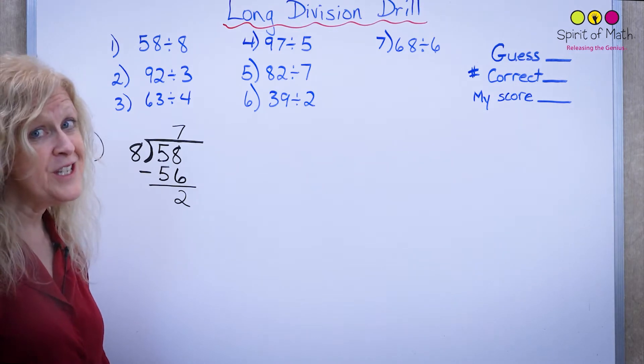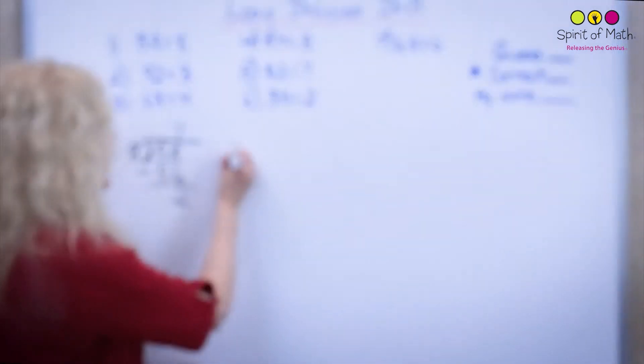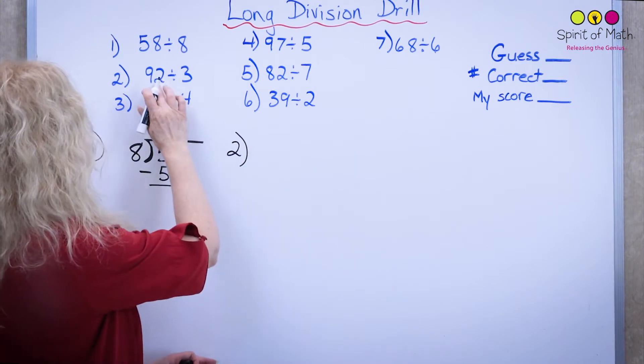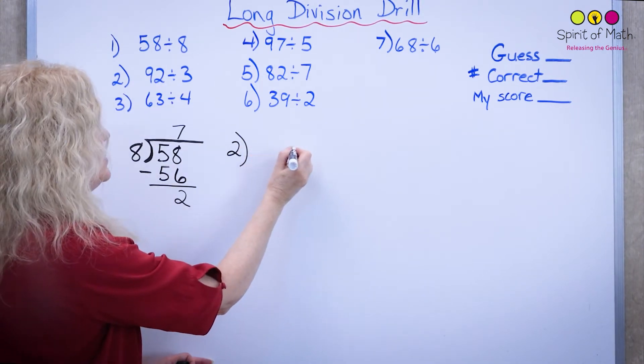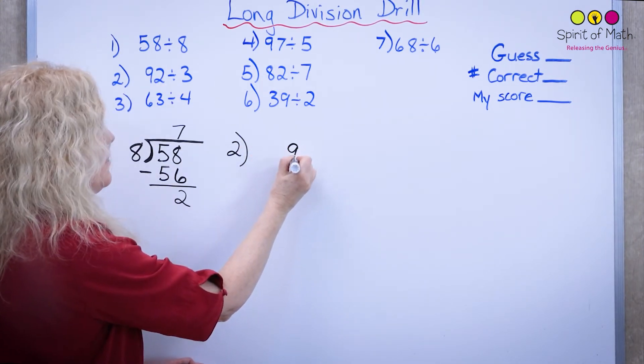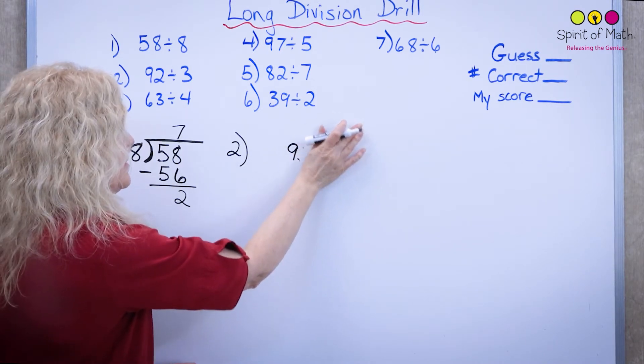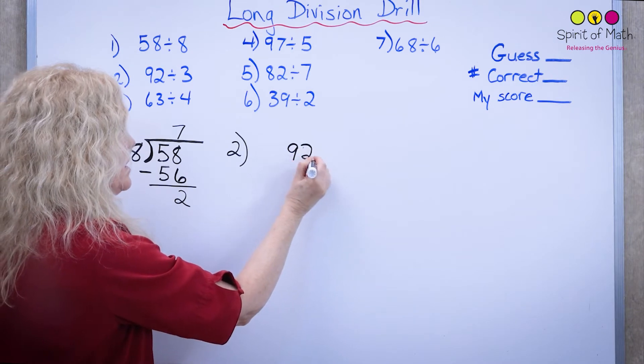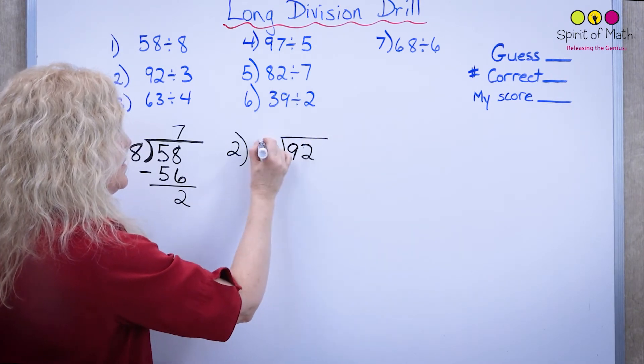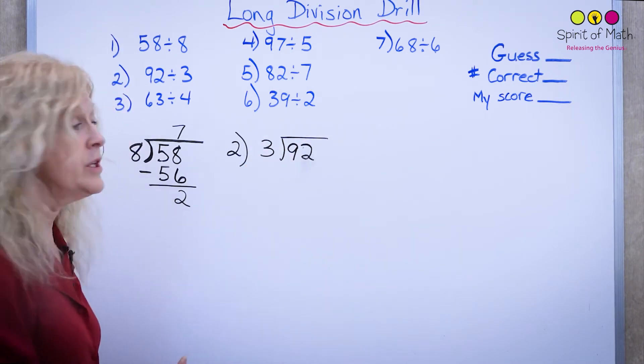Now let's go to the second one and you'll see that it gets a little trickier. So number two says 92 divided by 3. So you have to write out quickly, 92 divided by 3. So let's just erase that. 92 divided by 3.